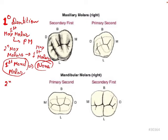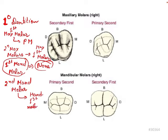The primary second mandibular molar is resembled by the permanent mandibular first molar. From this whole discussion, we can make one generalized statement: primary second resembles secondary first. If you remember this statement, you will be able to solve many related questions.